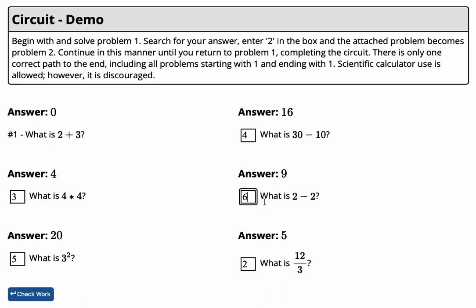The circuit is complete when you answer this question, what is 2 minus 2, and it takes you back to the only answer left, which was problem 1.